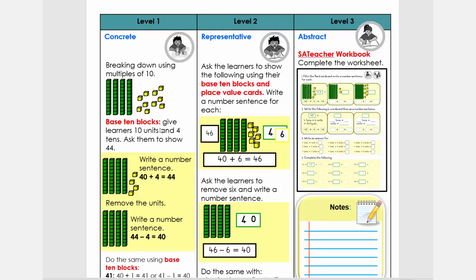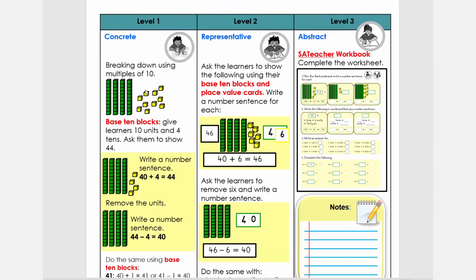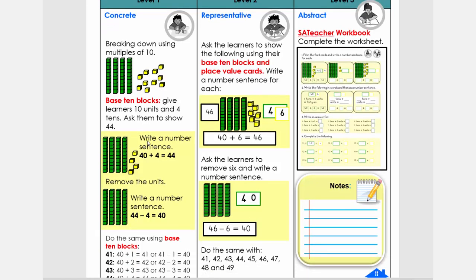Welcome back. We're going to look now at the concrete representative abstract level using different resources. Let's quickly look at the concrete level. So the concrete level, just as a revision, you're going to pack out 40. So it's four rods plus some units. Then you're going to add the rods and the units. Just place some place value activities to get them ready for this. Then you're going to write a number sentence on the board, 40 plus 4, and they need to show it with their base 10 blocks. You say it's 44.